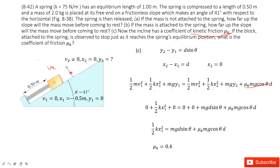The friction force is mu_k times the normal force, and the normal force equals mg cosine theta. So the friction force is mu_k times mg cosine theta. The thermal energy is friction force times d — the distance moved. In this case, x2 is 0, so d equals negative x1.